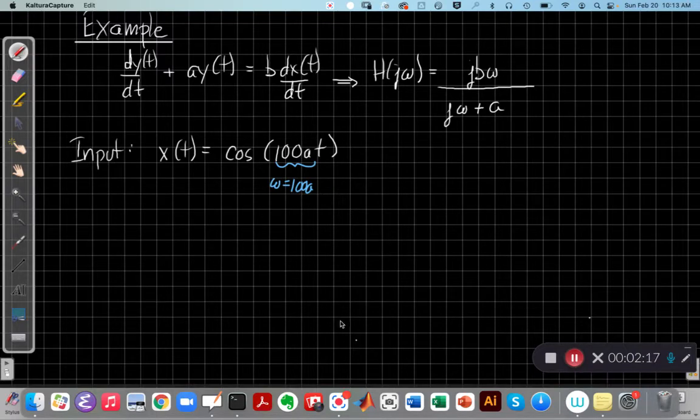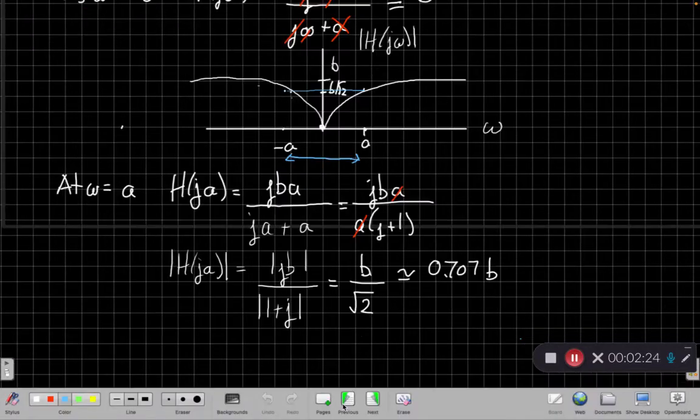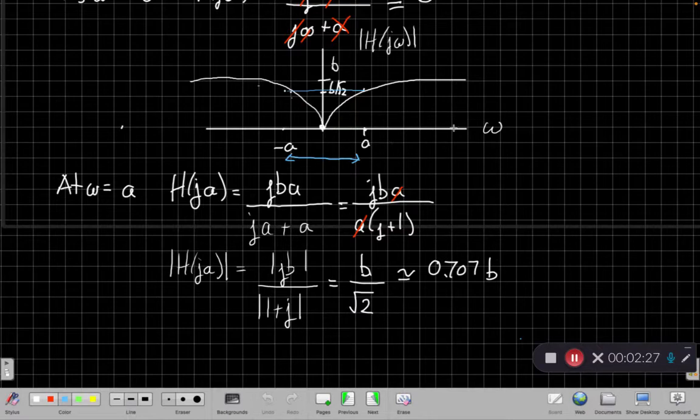When ω is 100 times a, that means I'm way above that half power frequency. I expect the gain to be approximately b. If I flip back to that plot on the previous page, I'm way up here, much, much higher than a. I expect the gain to be about b. Always a good engineering practice to think about what happens at high frequencies, low frequencies, to predict how we think something's going to behave, and then go through the math and see if our intuition is right and try and learn from that. So let's do that now.